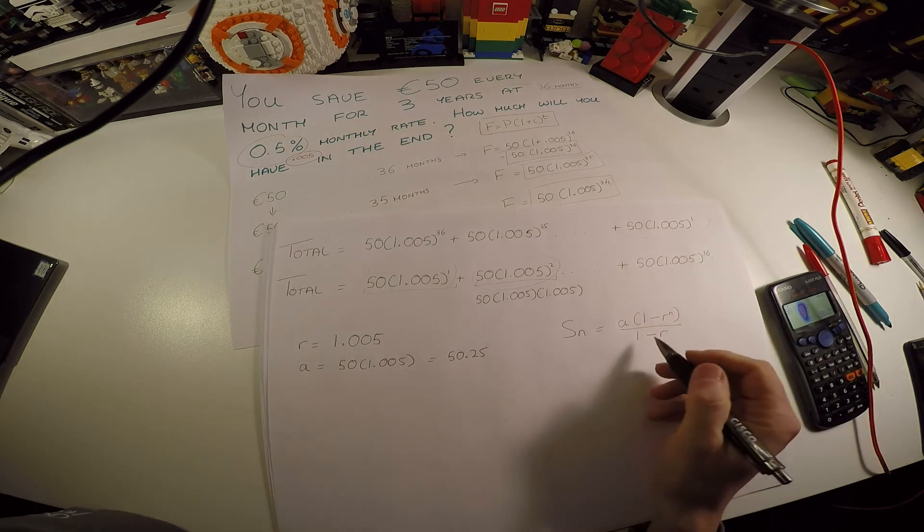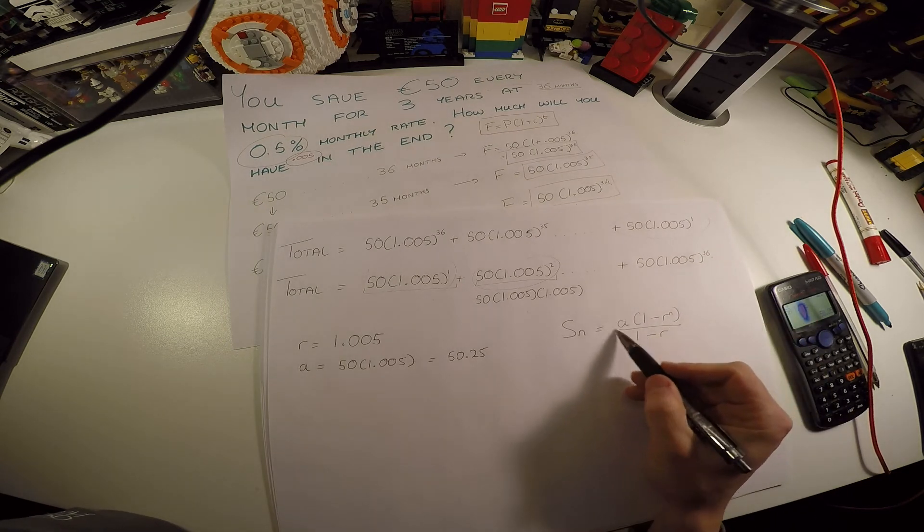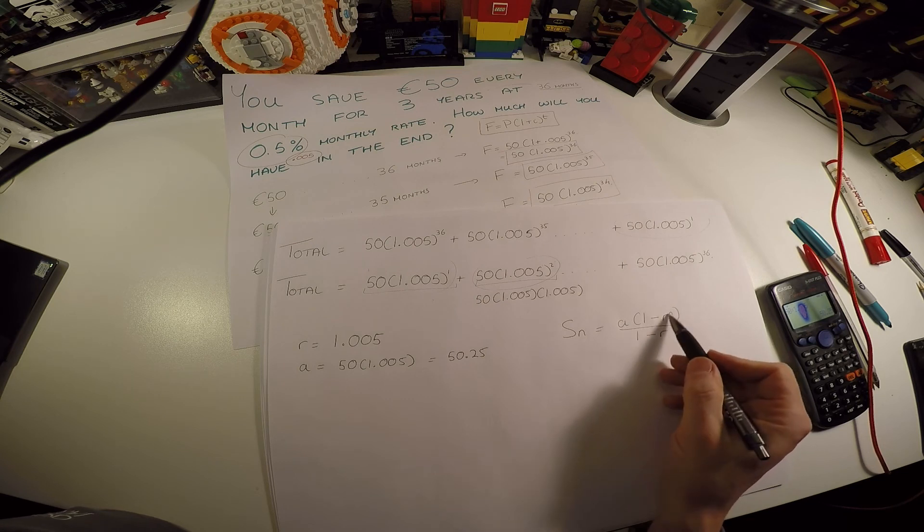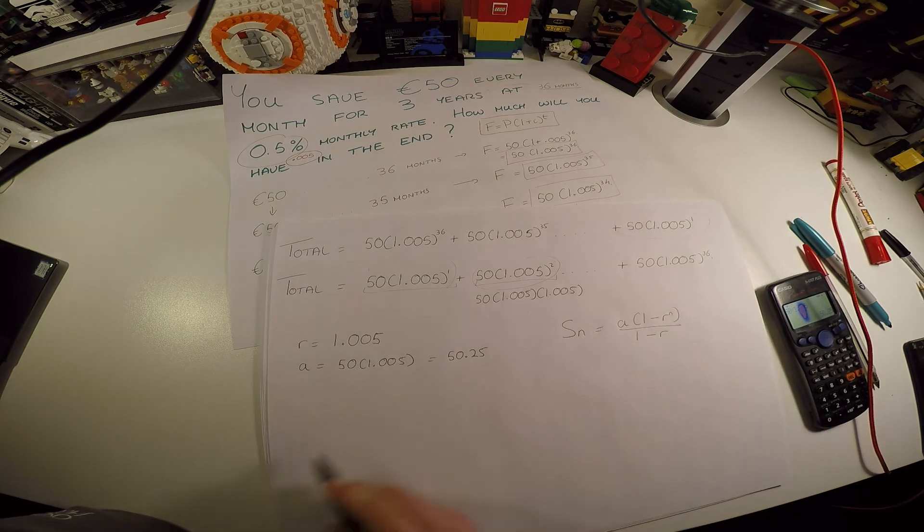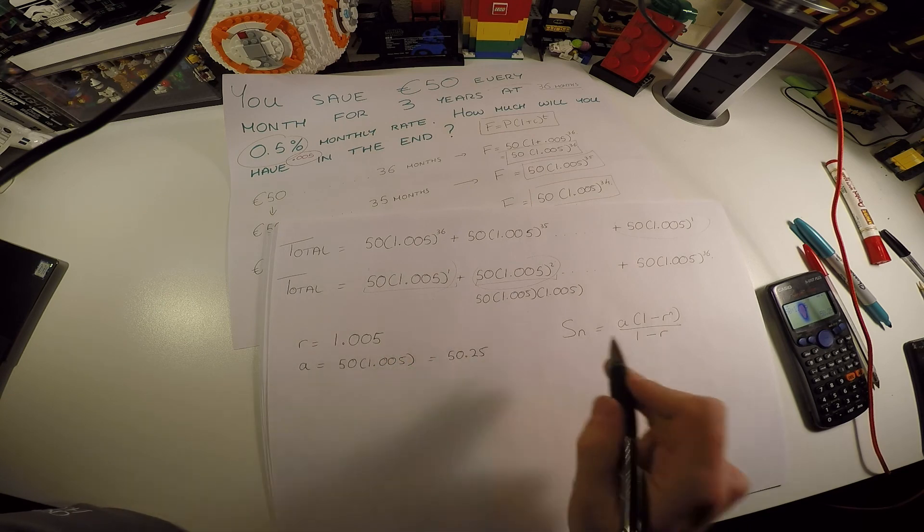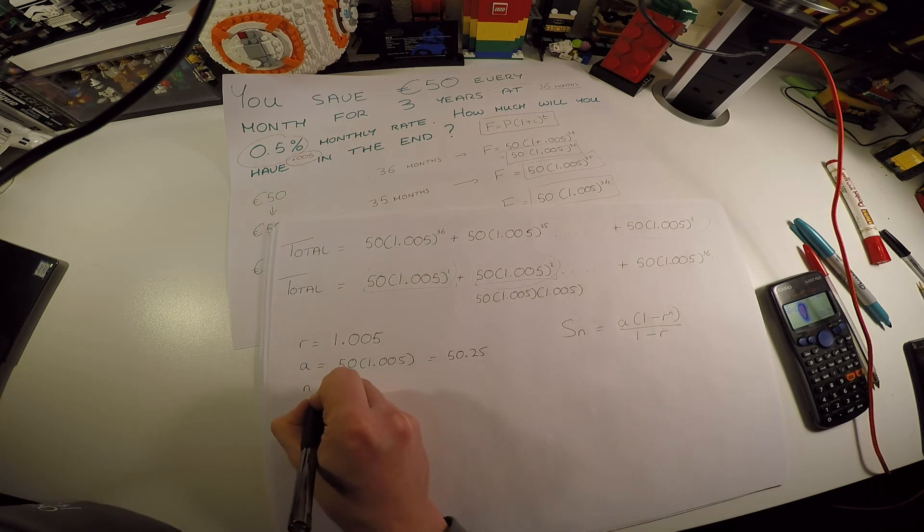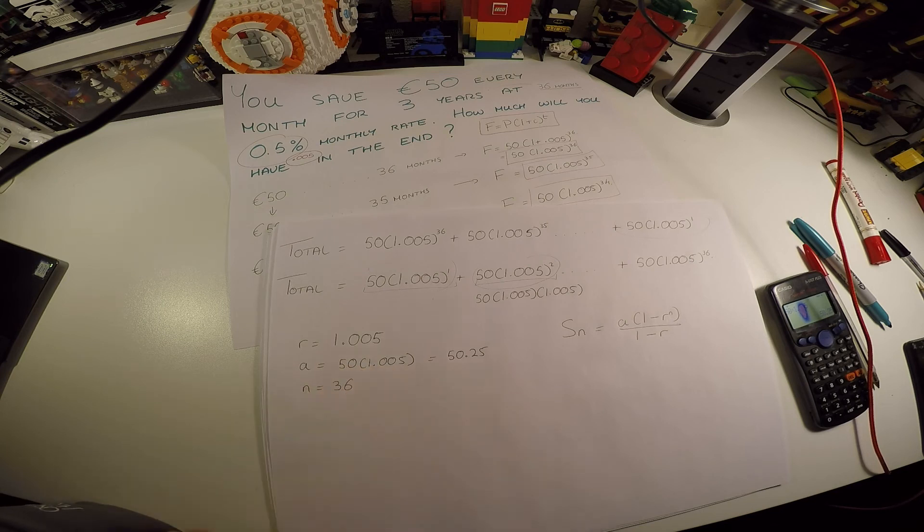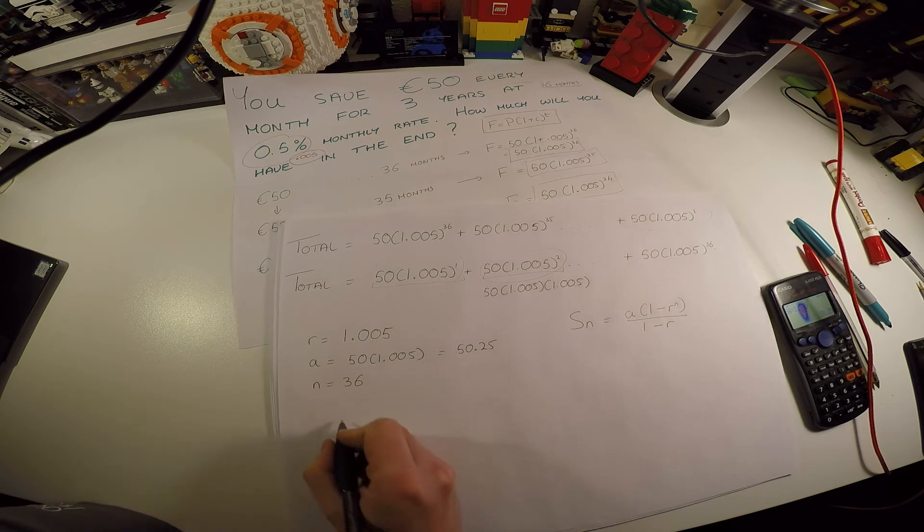For this, all you need is a first term and a ratio and how many terms you have. So we know we have 36 terms, we know our first term, we know our ratio. So we can change all this. So n for us is going to be 36 because that's 36 times lodging it.